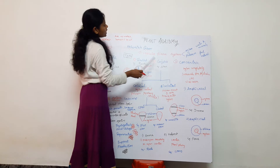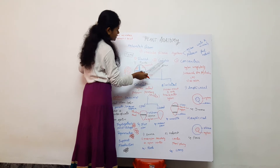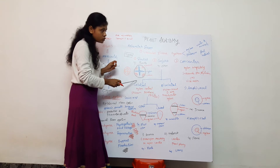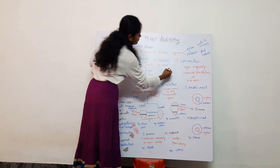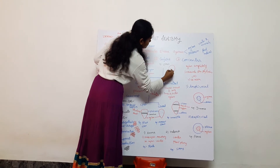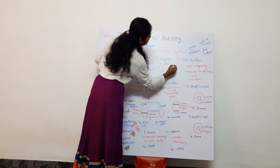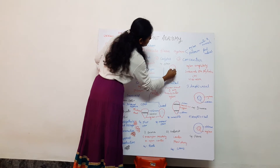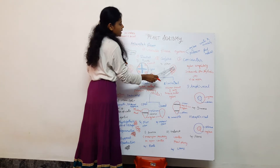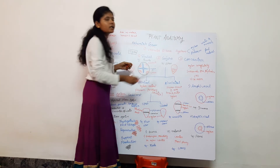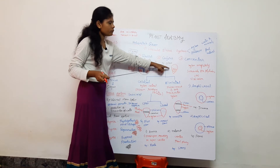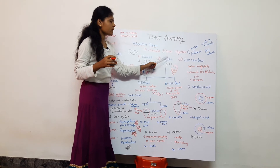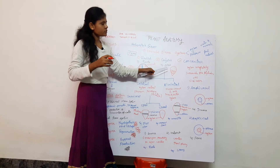The second type is the conjoint vascular bundle. In radial bundles, xylem and phloem are on different radii, but in conjoint bundles, xylem and phloem are present on the same radius. For example, xylem and phloem are on the same radius in stem tissue.